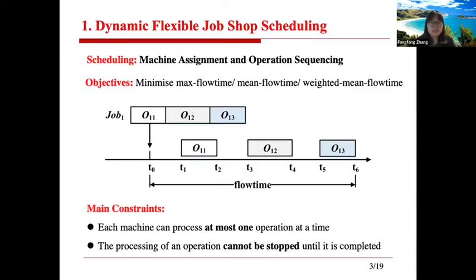What does scheduling mean exactly in flexible job-shop scheduling? It means we need to make two decisions simultaneously. The first one is machine assignment — when a new job arrives at the job shop, we need to allocate it to a machine. The second is the operation sequence — when a machine becomes idle and there are many operations waiting, we choose which one to process next. We need to make these two decisions at the same time.